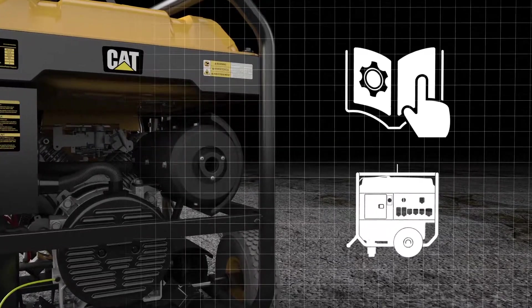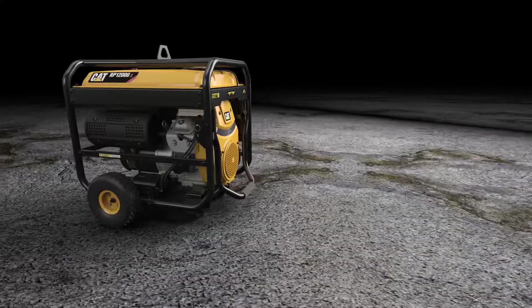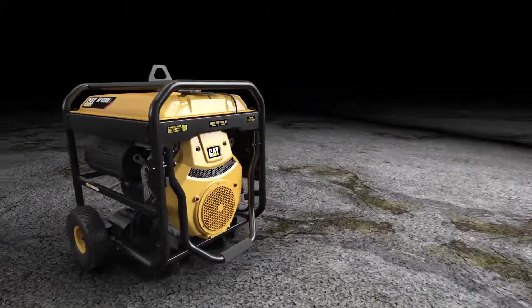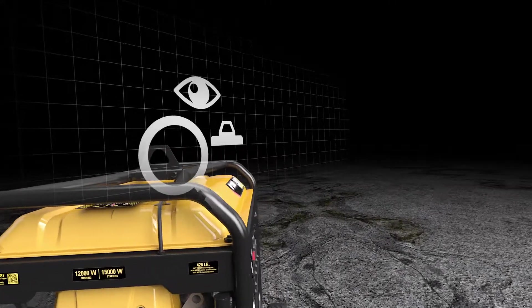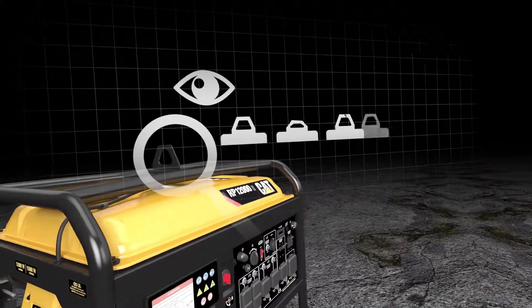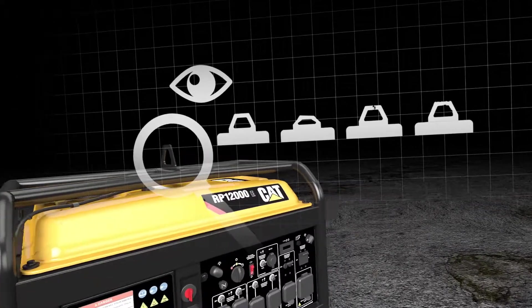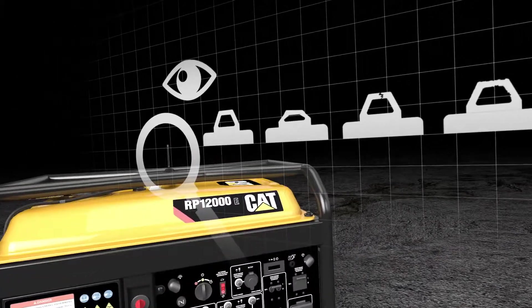Moving the 12 kilowatt unit using the lifting eye can be done safely by following these tips. Make sure the lifting eye is properly attached, is not bent, cracked, or corroded. Refer to the generator's owner's manual for specifications.